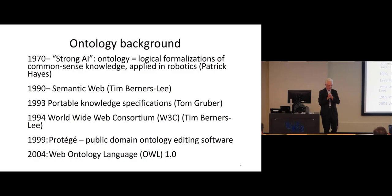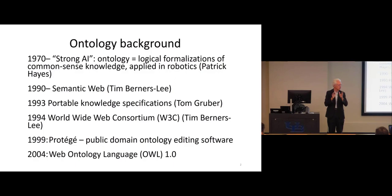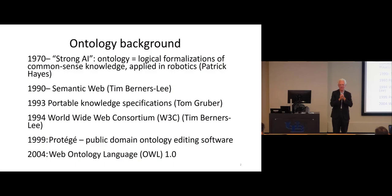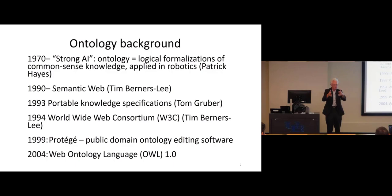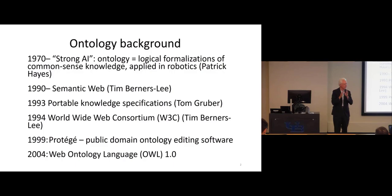This was part of knowledge representation, a subfield of computer science. That particular phase in AI failed—strong AI, meaning translating human knowledge into computer-readable knowledge, didn't work. But it gave rise to interesting ideas about knowledge representation and how you transfer knowledge from one computer to another, or from one person to a computer. Knowledge representation was born as a discipline, and ontology was largely a part of it.